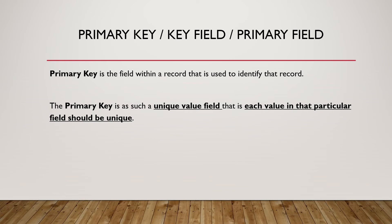Primary key, also known as key field or primary field, is a field within a record that is used to identify that record. The primary key is a unique value field — that is, each value in that particular field should be unique. So the primary key is a field in which all the values will be unique, and it is used to identify that record.